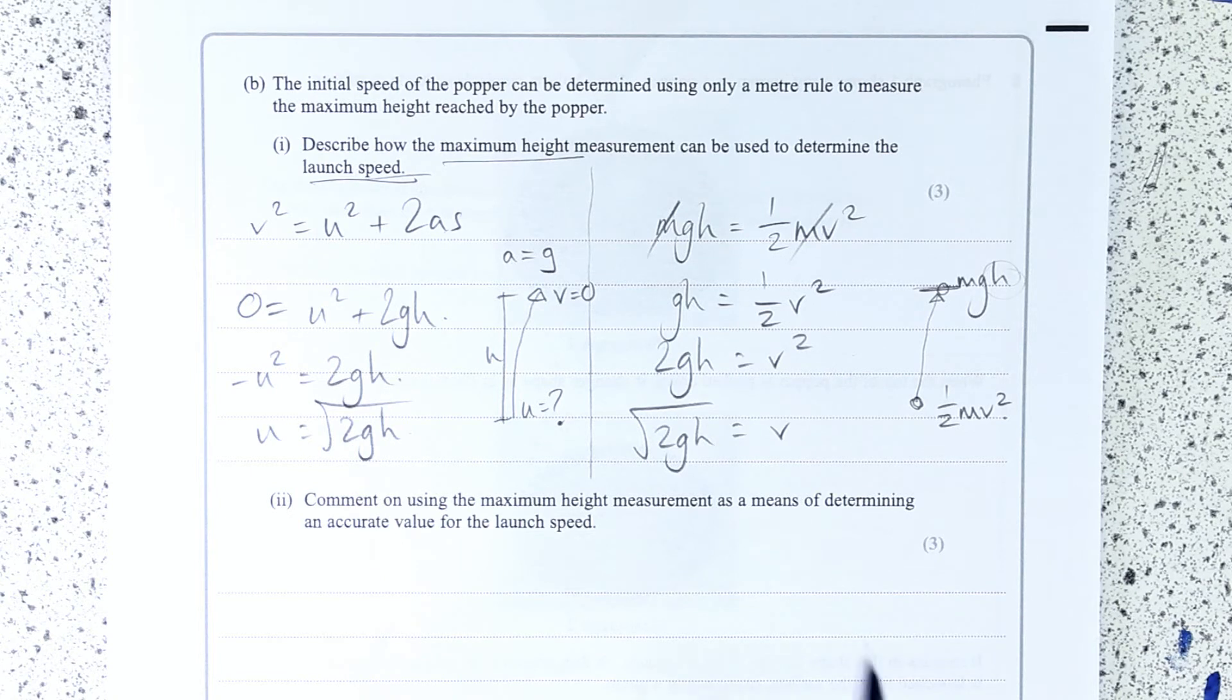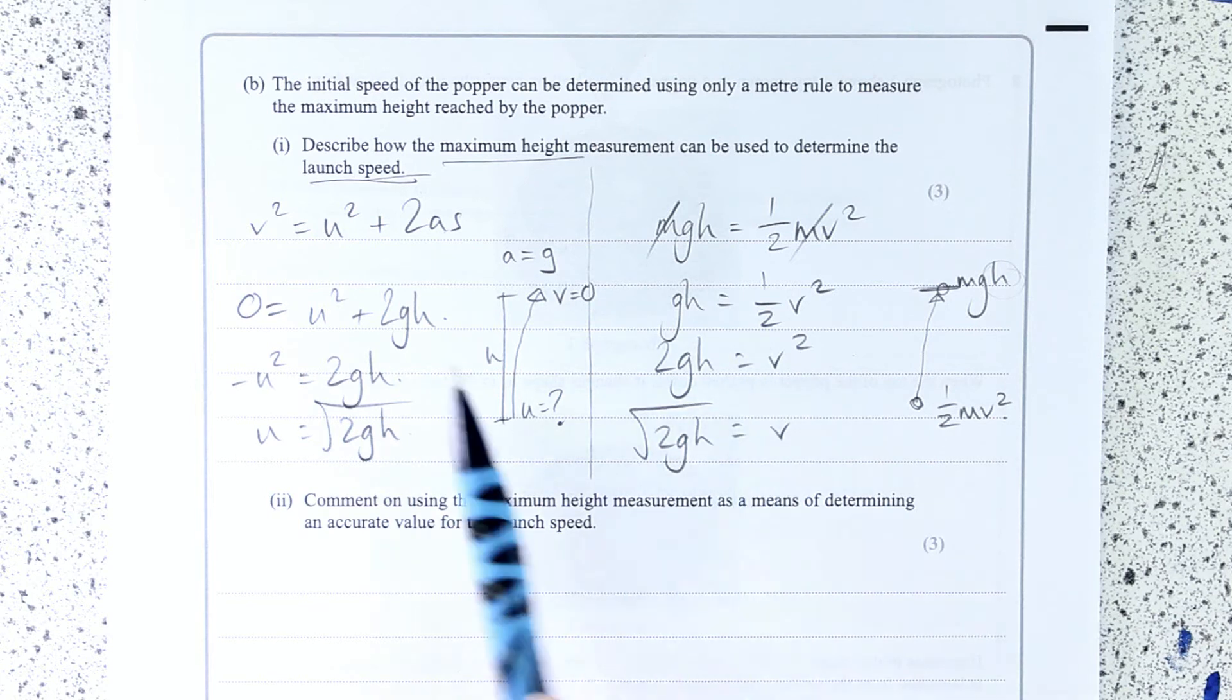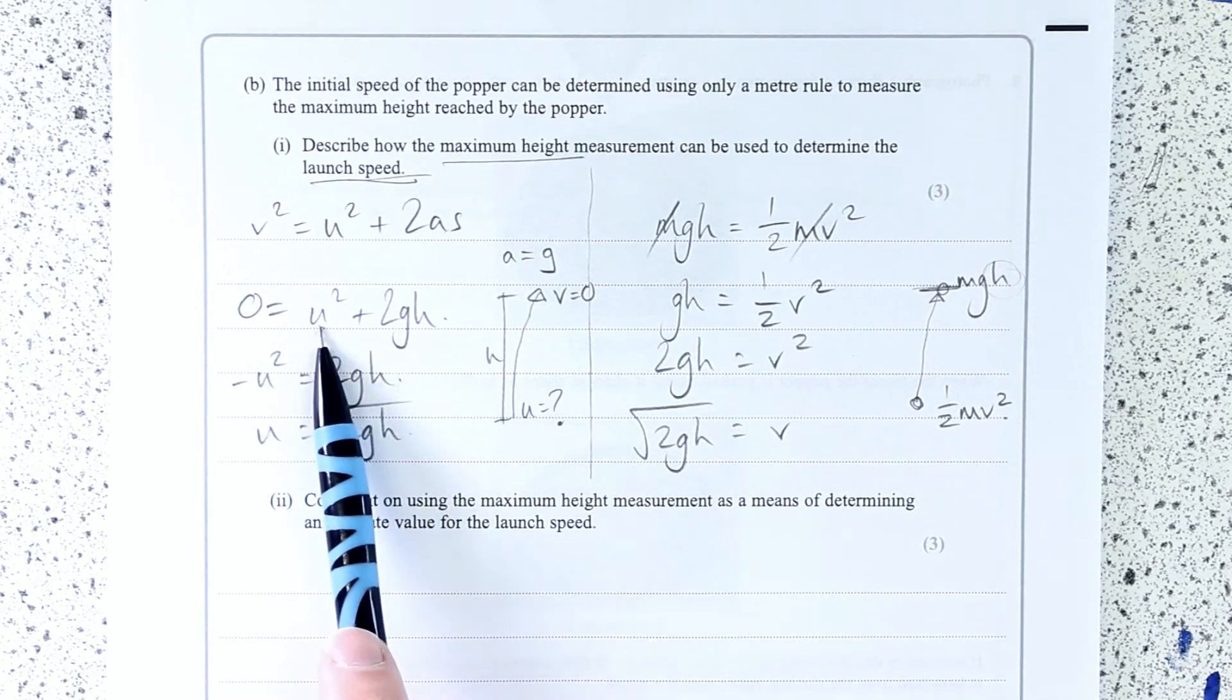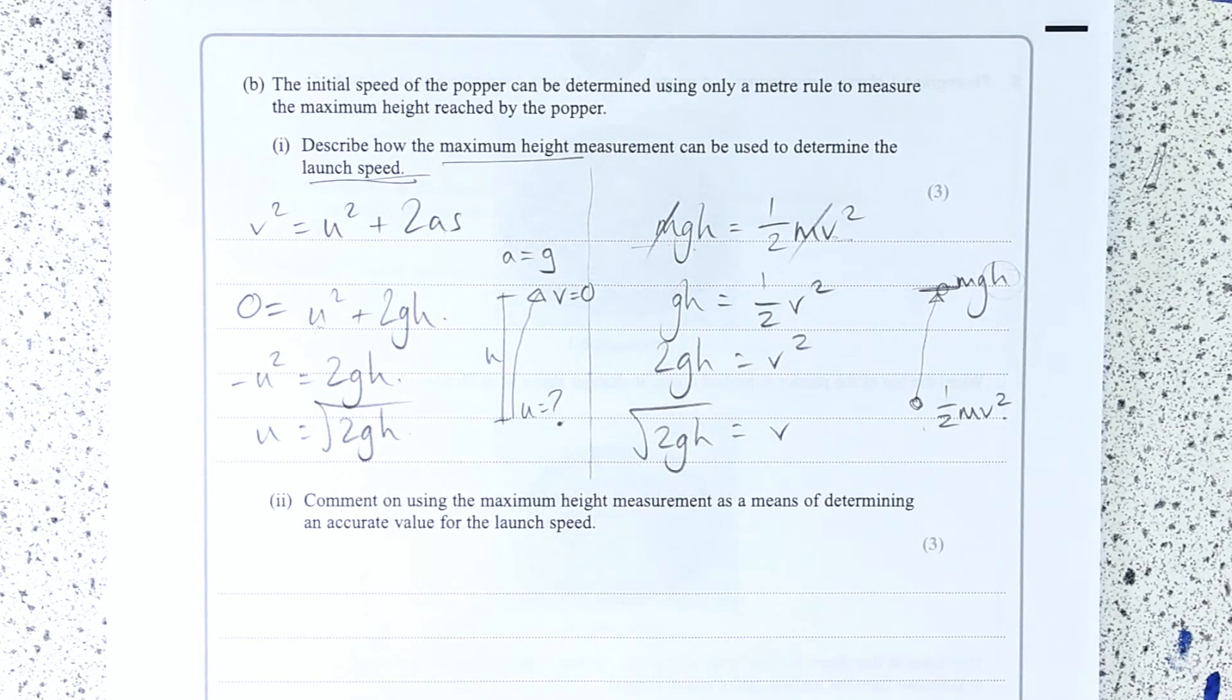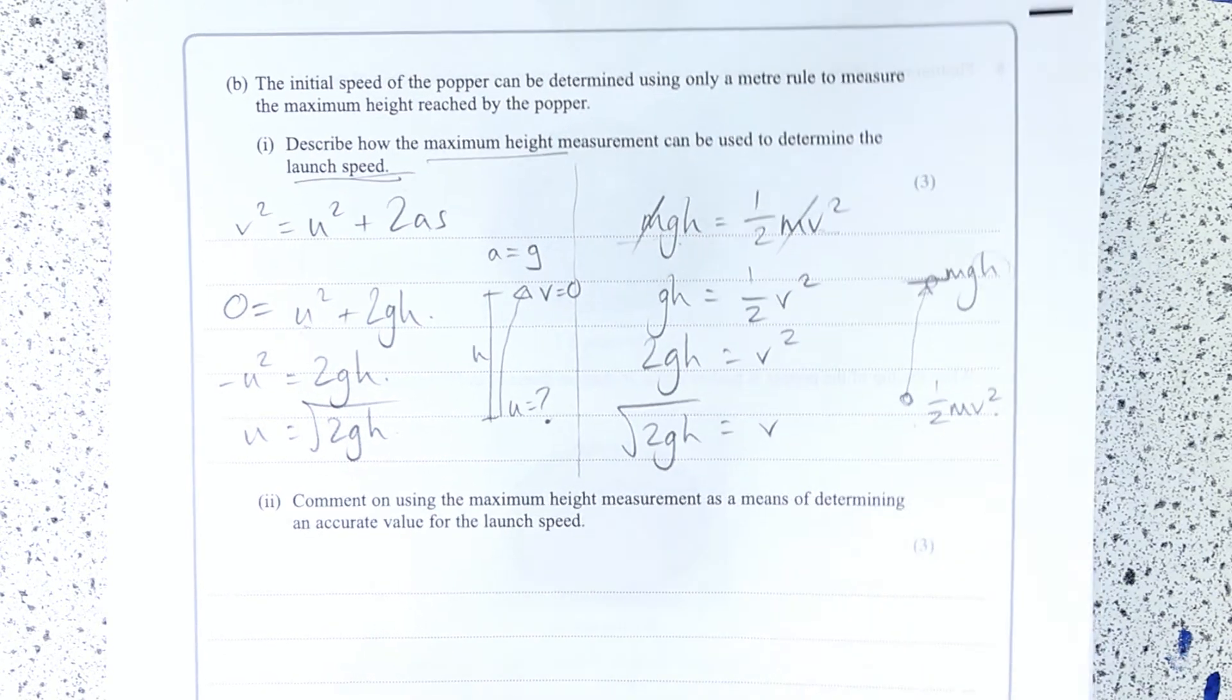It does need to be clear that you've stated that the final speed is 0 in this case, or that we've got a conversion of kinetic energy into gravitational potential. So we've used our conservation of energy equation there.